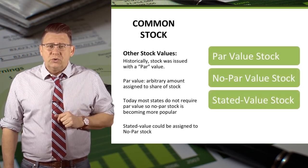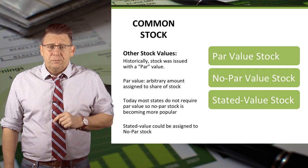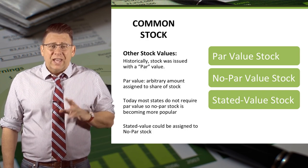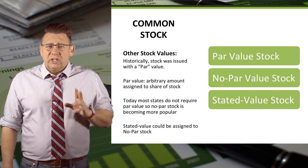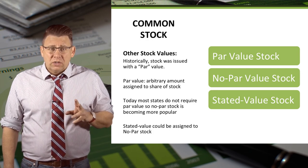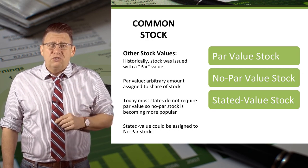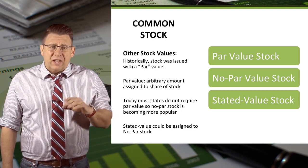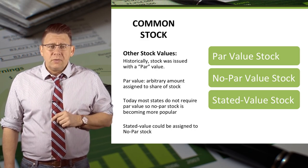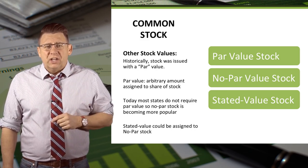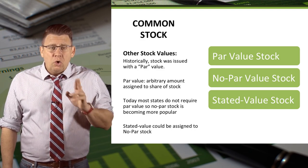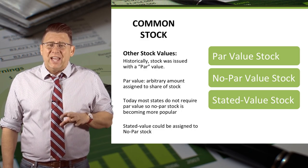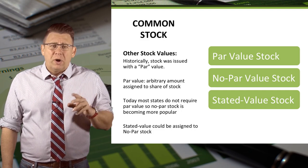Historically, stock was issued with a legal value known as par value. Par value is just an arbitrary value assigned to a share of stock as required by a state. Usually, par value is set low to avoid legal issues. In fact, most states do not allow companies to issue stock below par value, so often par value is a penny to a dollar. Nowadays, most states no longer require par value, so no par value stock is becoming more popular. Sometimes corporations assign a stated value to a no par stock.